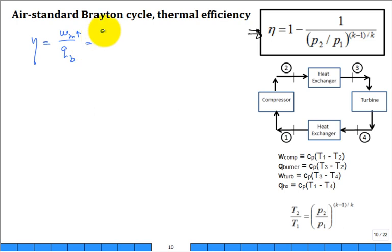Instead of work net, use Q net divided by Q in the burner. What is Q net? Q of the burner plus Q in that heat exchanger divided by Q in the burner. So right away it's starting to look like what you want: one plus Q in that heat exchanger divided by Q in the burner.